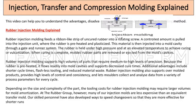Rubber injection molding also supports over-molded products, provides high levels of control and consistency, and lets molders collect and analyze data from a variety of process parameters for every cycle. Depending on the size and complexity of the part, tooling costs may require larger volumes for mold amortization.